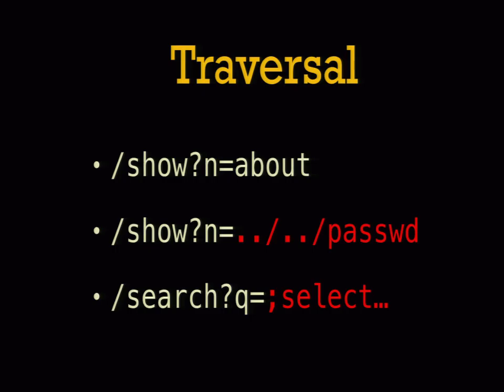Traversal attacks cover a lot of similar attacks. In general, it's the idea of — given that the application is supposed to give access to certain data — tricking it into giving you access to other data. This includes directory traversal or SQL injection attacks. A common overlooked traversal-style attack: error logging will often include all environment variables. When you trigger an exception log, it usually dumps all environment variables, which can include things you thought were only in RAM. If they can attack your error logging system, they could get access to that information.